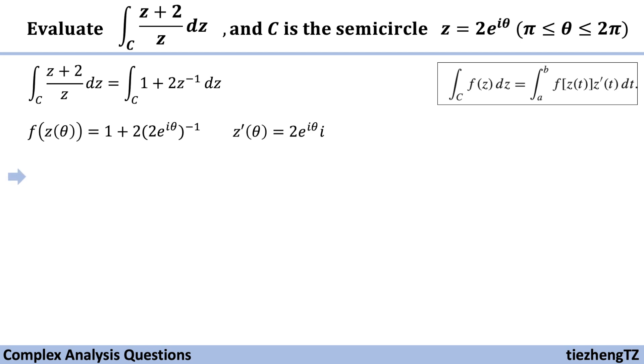So next we just substitute. Our equation becomes integral from pi to 2 pi, f of z theta times z theta prime d theta. Reorganizing, our equation becomes integral from pi to 2 pi, 2i times e to the power of i theta plus 2i d theta.